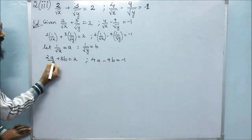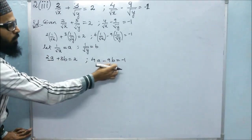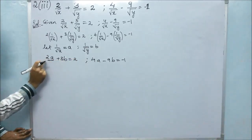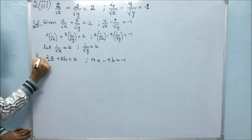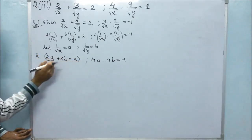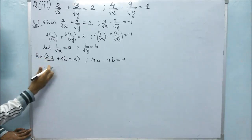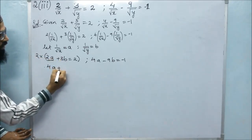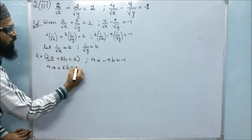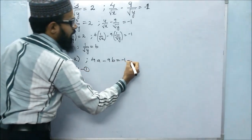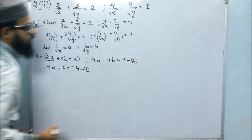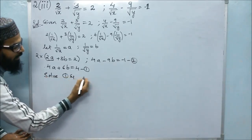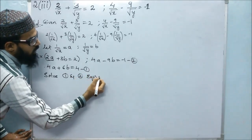To make any one of the A or B coefficients equal, we have to multiply. So let us multiply the first equation by 2, and then solve the first and second equations.